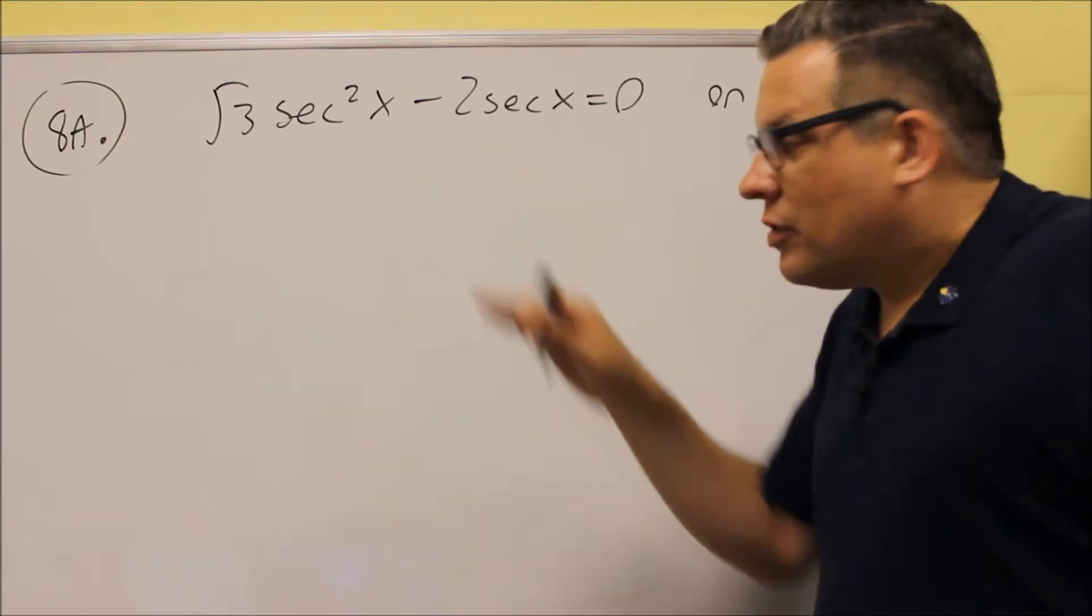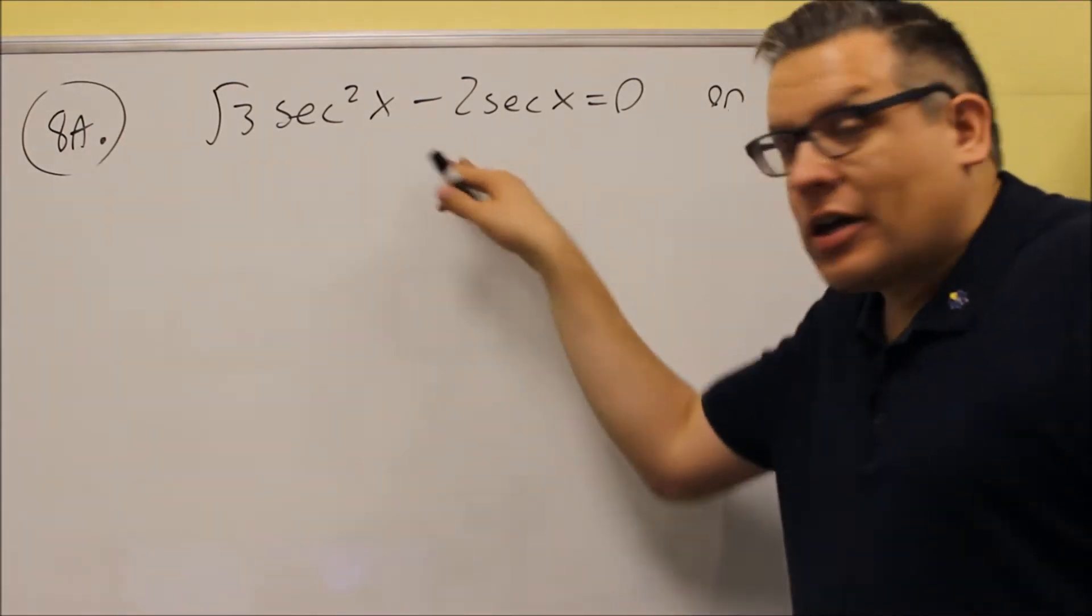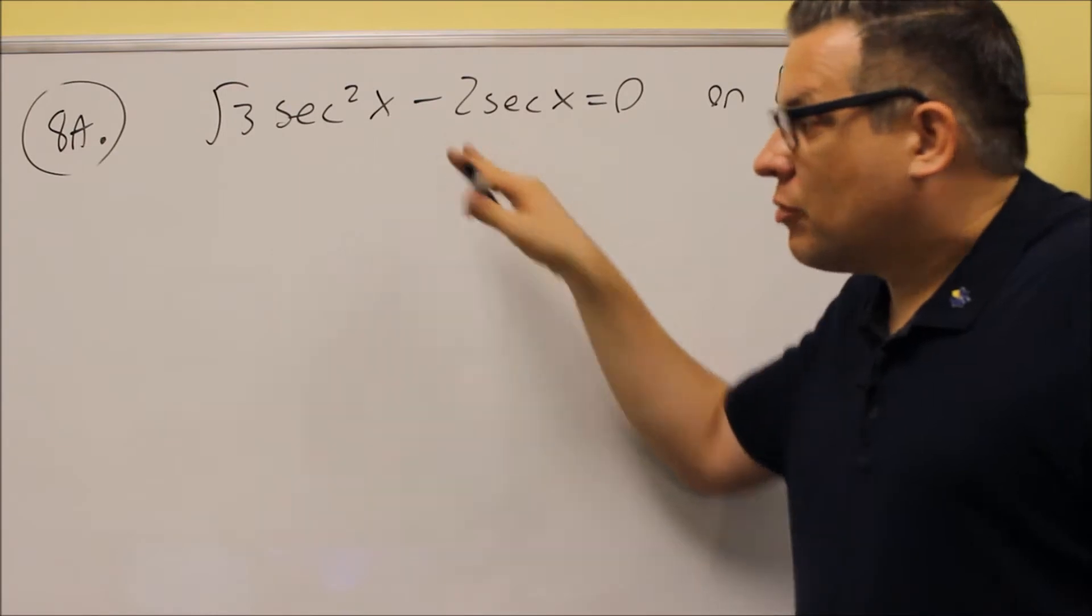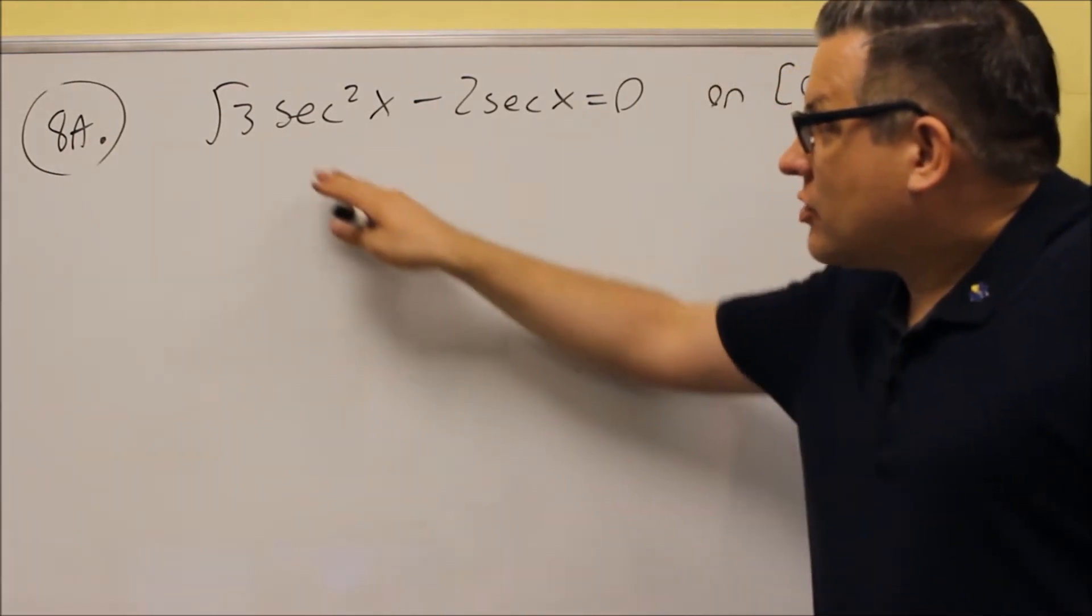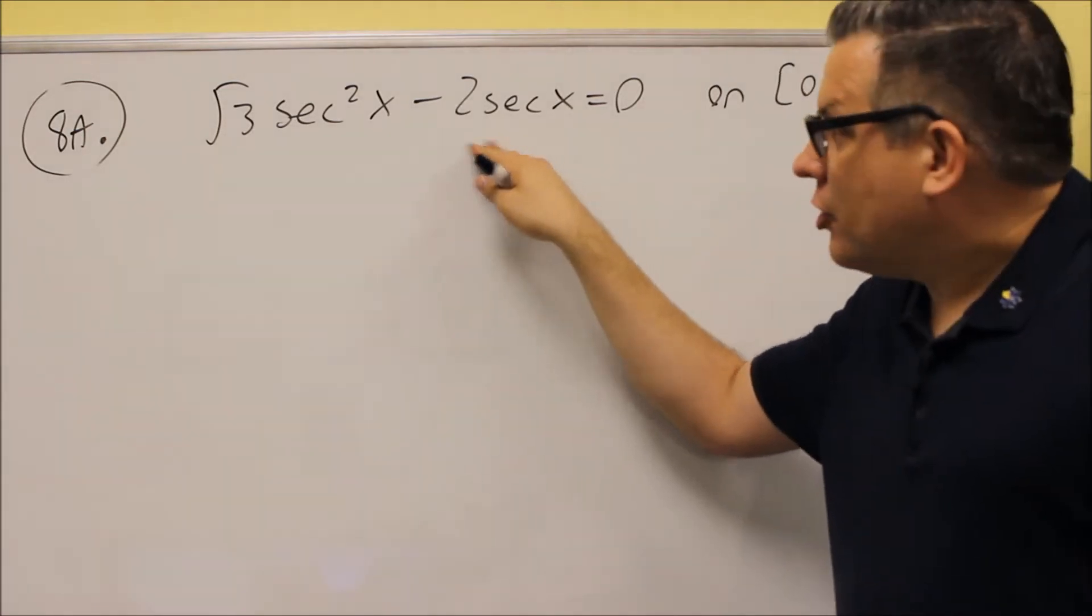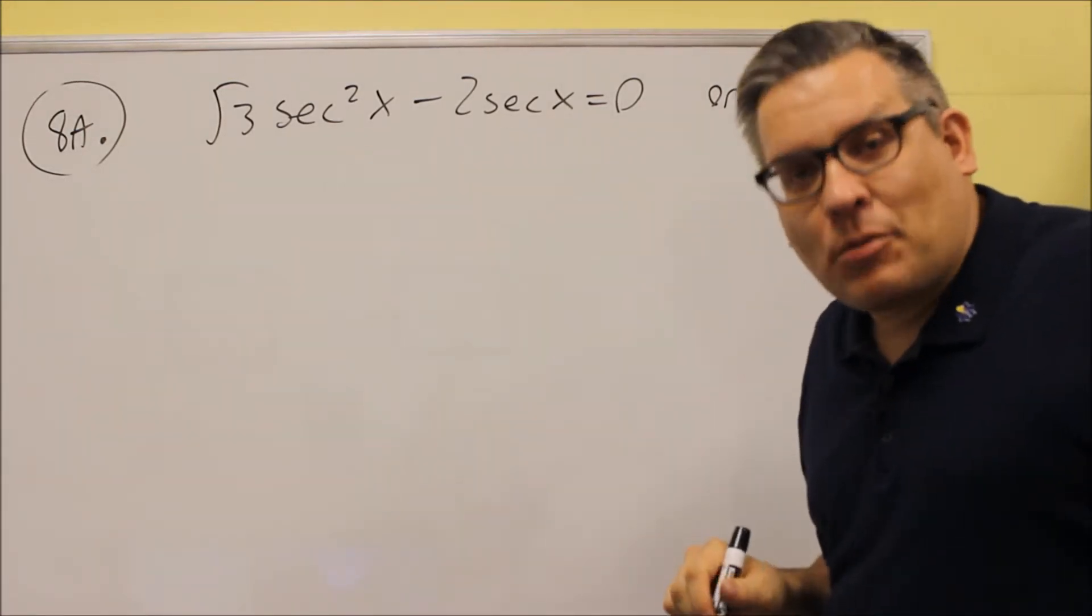The first problem, number eight, is going to be one where you need to pull out a common factor. It will be something similar to this one and the next one that we will do. So for the first one, you are going to just factor out a common factor.